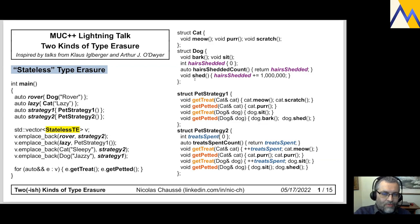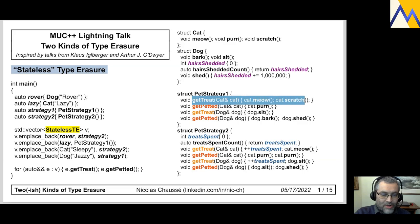I have two petting strategies for each of them. First strategy, for example, if my cat wants to get a treat, he will meow and scratch. And strategy number two, if my dog wants to get a treat, he will sit.